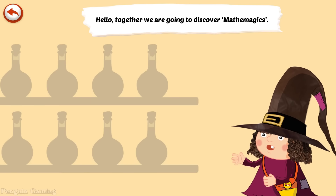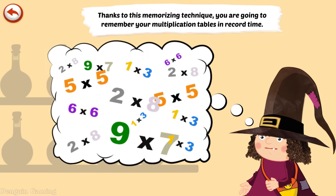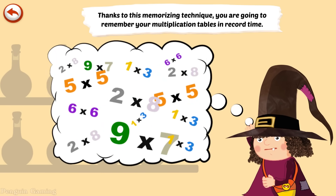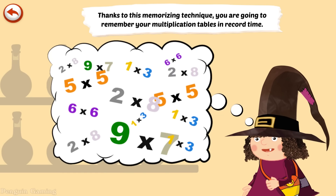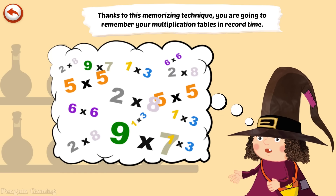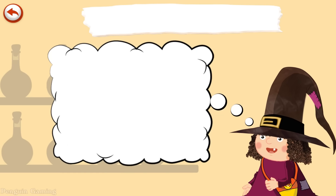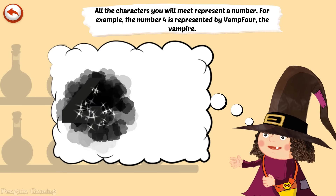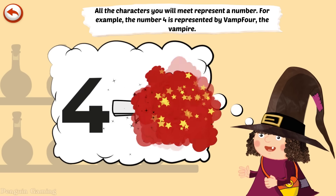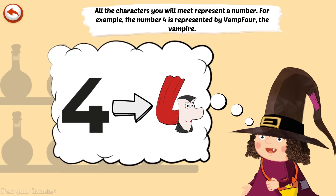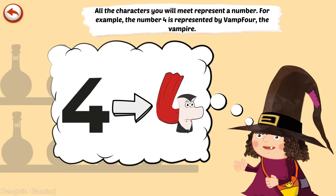Together we are going to discover Mathemagics. Thanks to this memorising technique, you are going to remember your multiplication tables in record time. All the characters you will meet represent a number. For example, the number 4 is represented by Vamp4, the vampire.